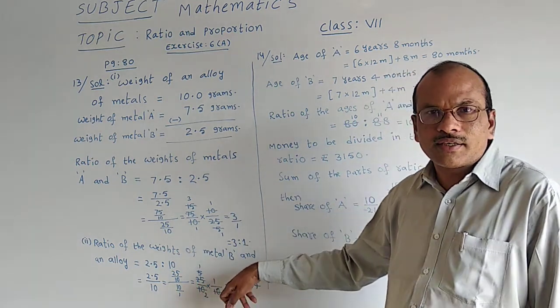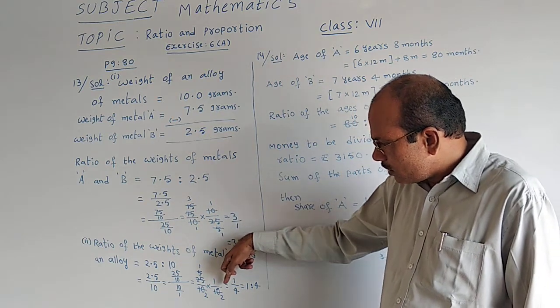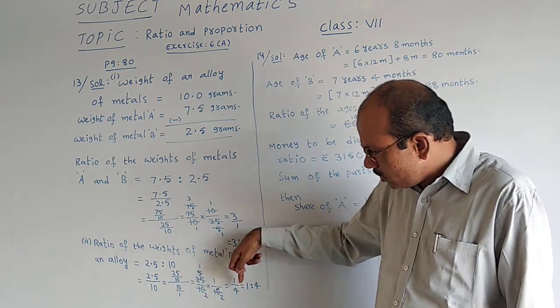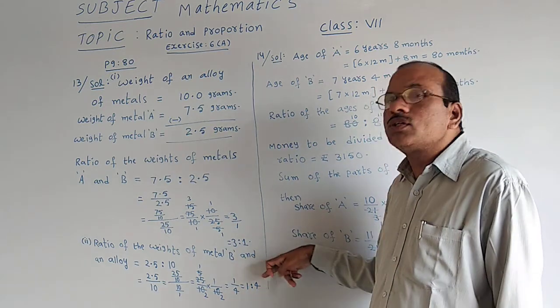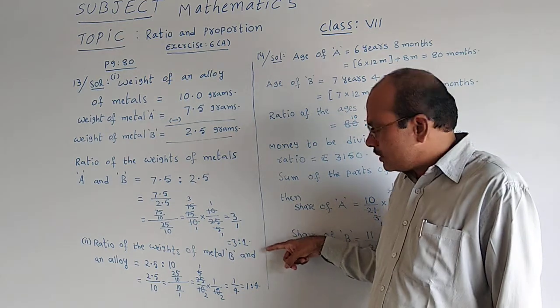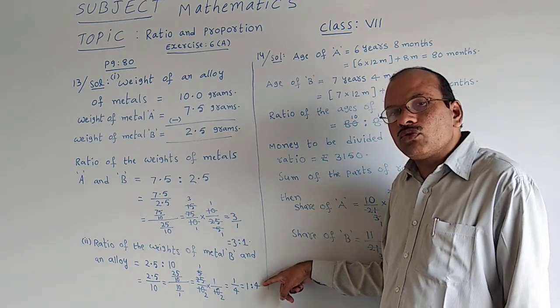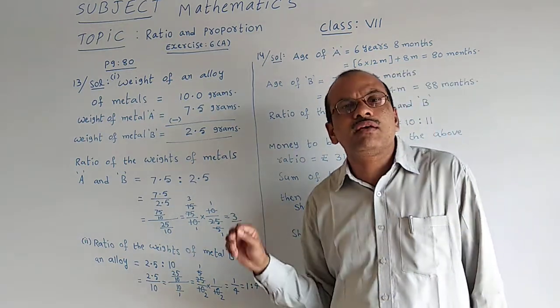Then again 5 table: 5 ones 5, 5 twos are 10. Then numerators are 1 and 1. 1 by 2 twos are 4. 1 by 4 can be written as 1 is to 4. First answer 3 is to 1, second answer 1 is to 4.